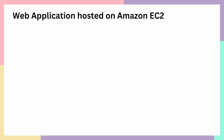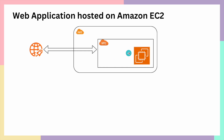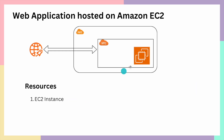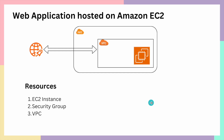Let's imagine we are hosting a web application on Amazon EC2, and users will be able to access this application through the internet. The resources you would need in AWS to run your web application on EC2 are: first, an EC2 instance; second, a security group to define rules for traffic in and out of your instance; and third, a VPC in which you will create your EC2 instance.